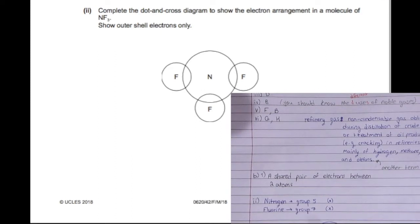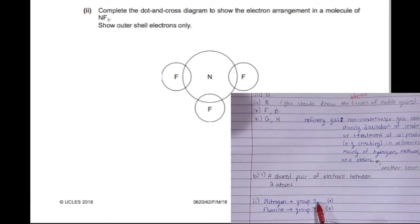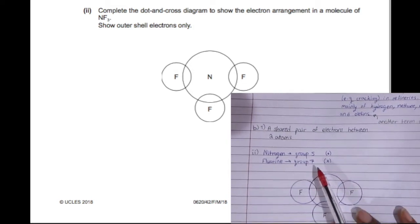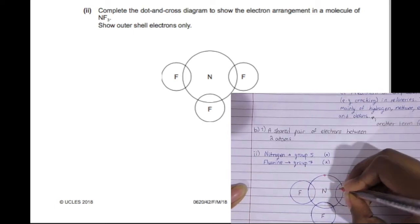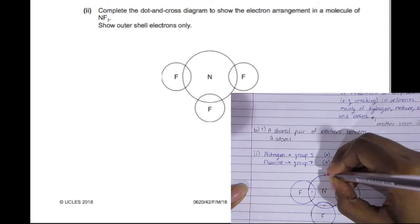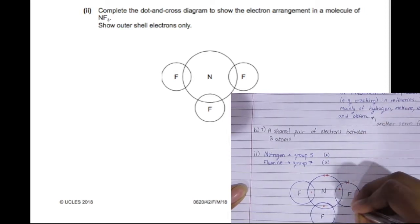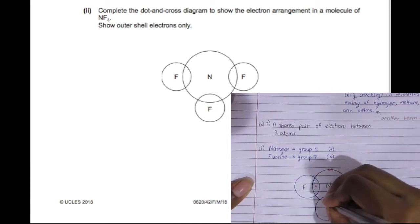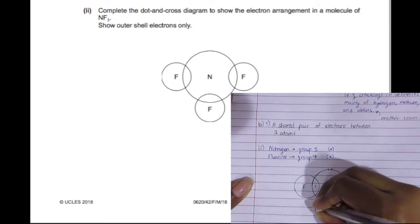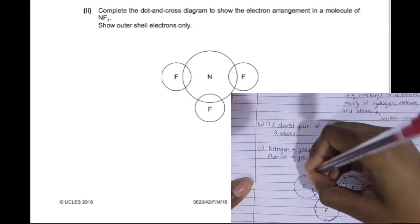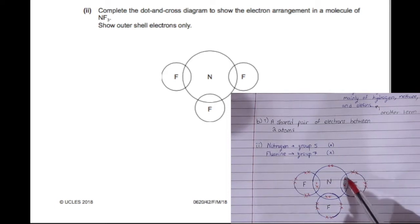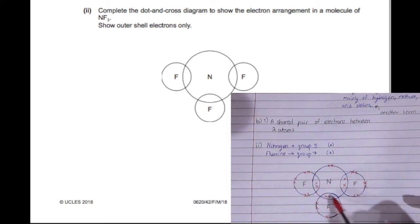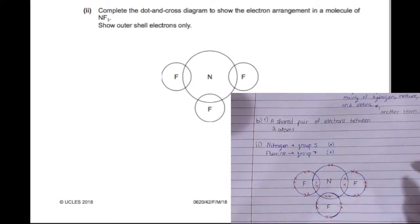Now we're supposed to complete the dot-and-cross diagram for this. Nitrogen is in group five and fluorine is in group seven, so nitrogen has five valence electrons and fluorine has seven valence electrons. For the nitrogen, I kept it as dots and for fluorine I kept it as crosses. We're going to place it in there, going in order, one cross, one dot at the top, then on the right, then the bottom, on the left, and you add again. At the end it creates a full octet because they're sharing the electrons, so each atom has eight electrons, making it stable.